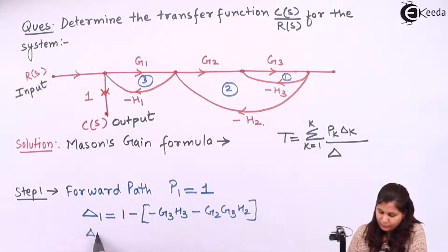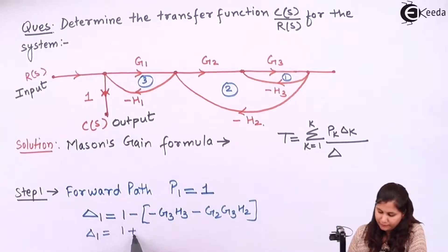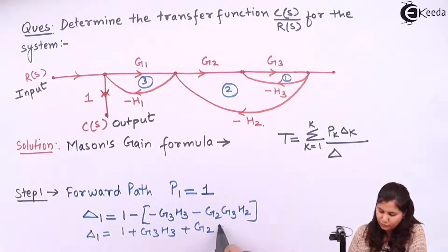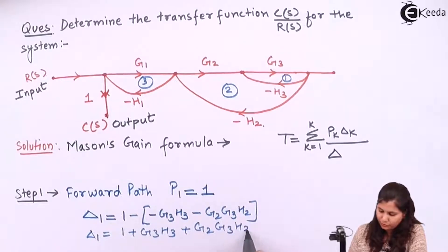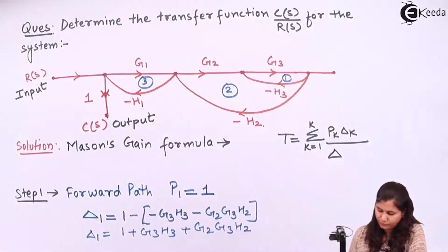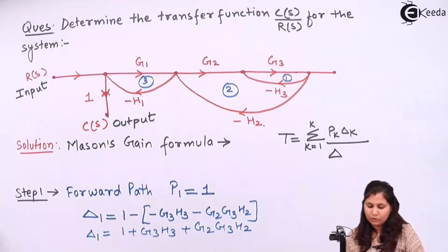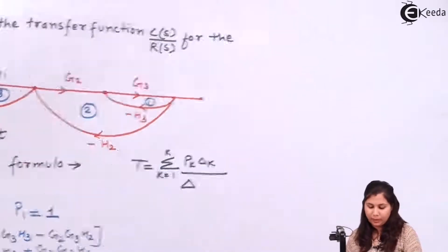So Δ1 will be 1 + G3H3 + G2G3H2. So this is our step 1.